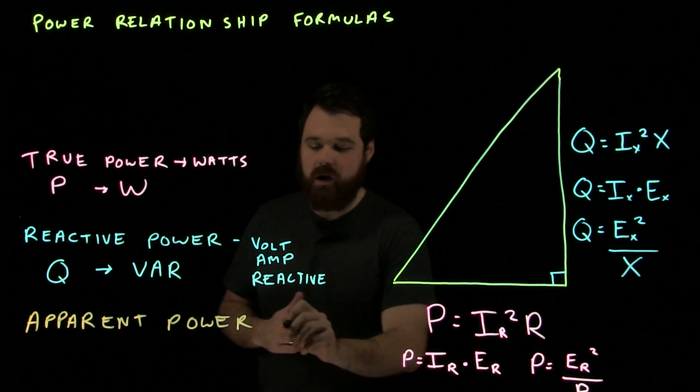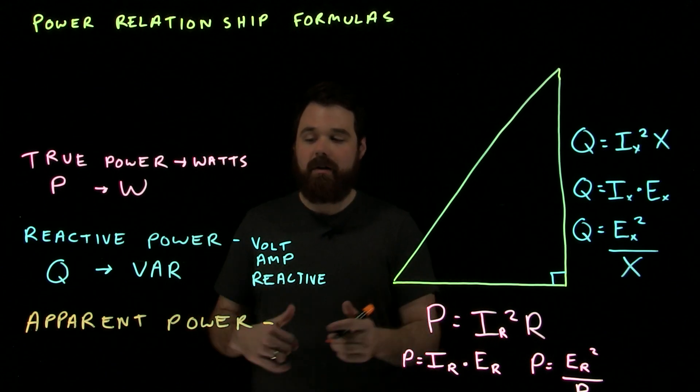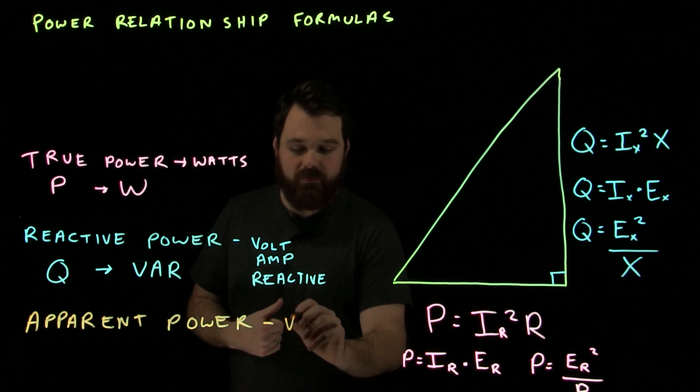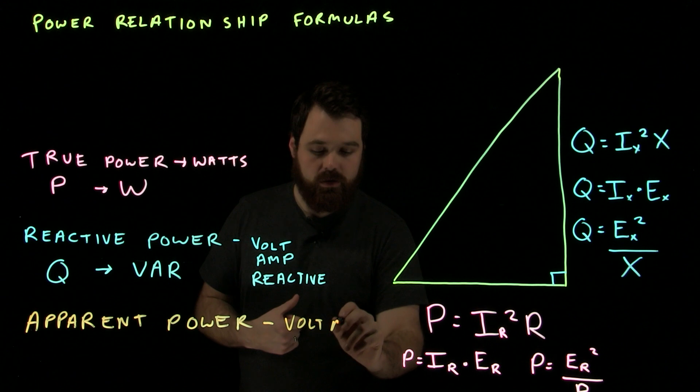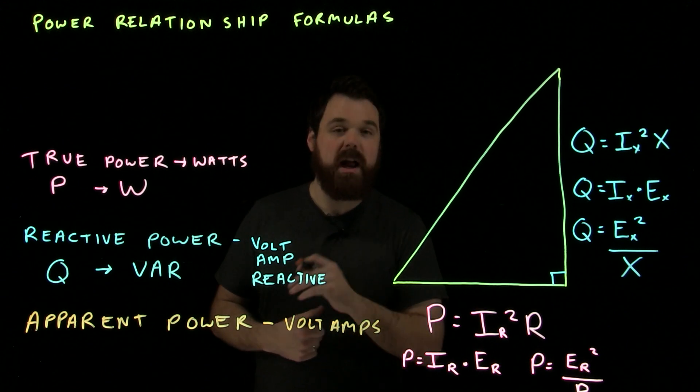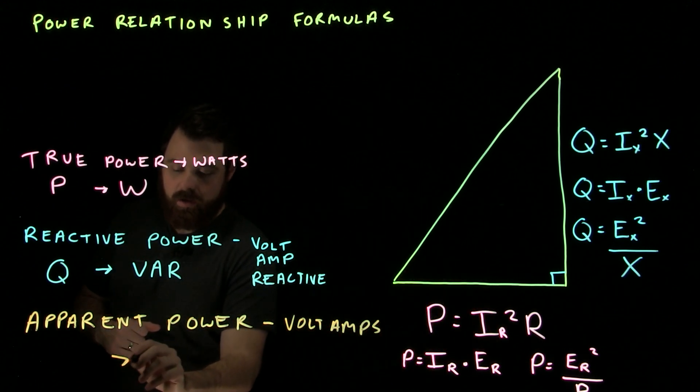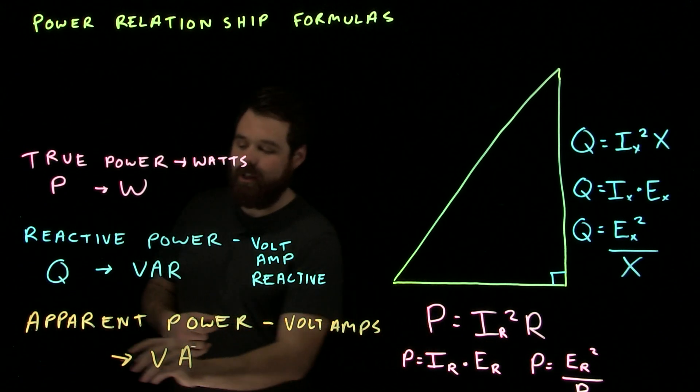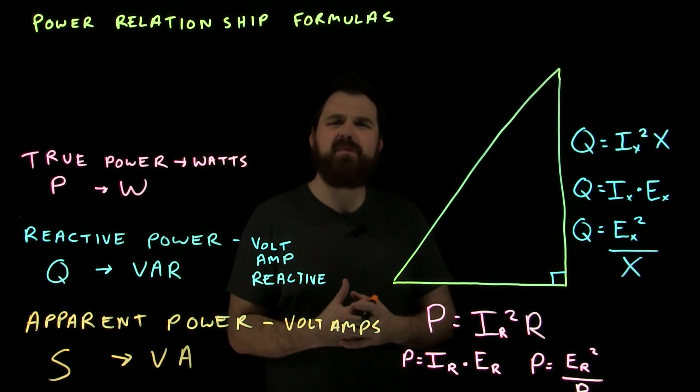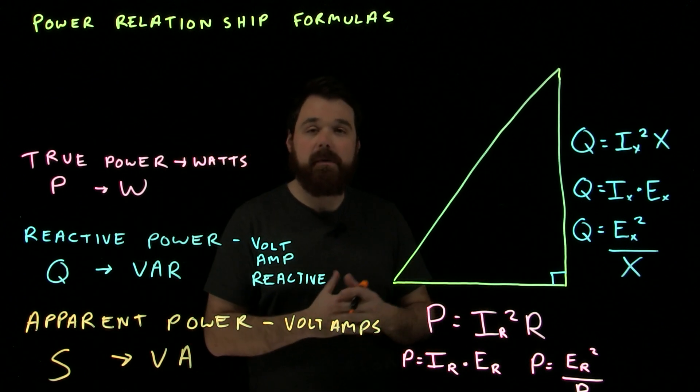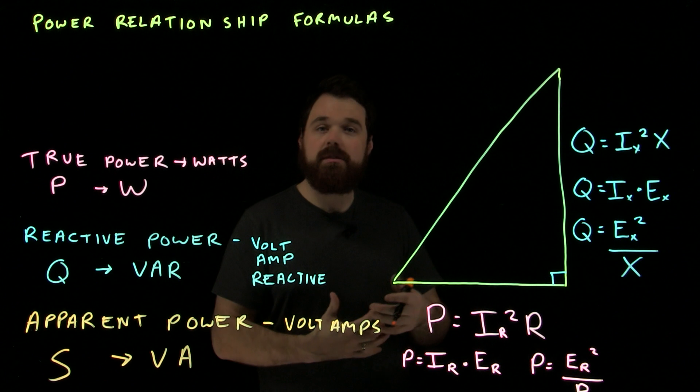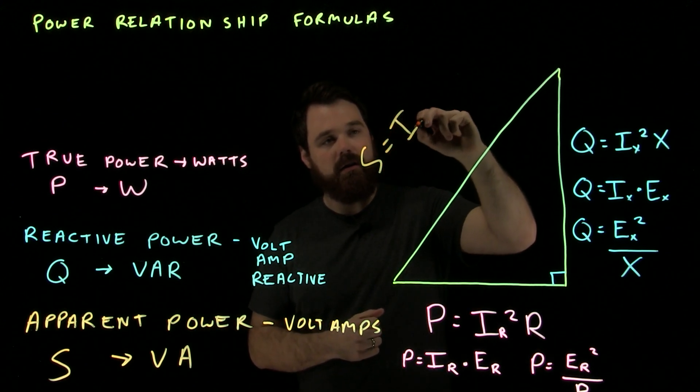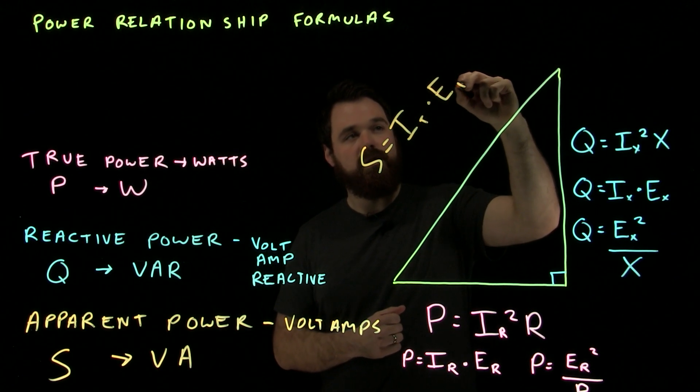And that's all we're going to call apparent power. And I said apparent power is total volts and the total amps in a circuit. We're actually going to measure that in volt amps. Or, we'll say VA. The symbol for apparent power is S. So, we get some formulas. All of them are going to work. I think the best one that we're going to want to use, most often we're going to use,